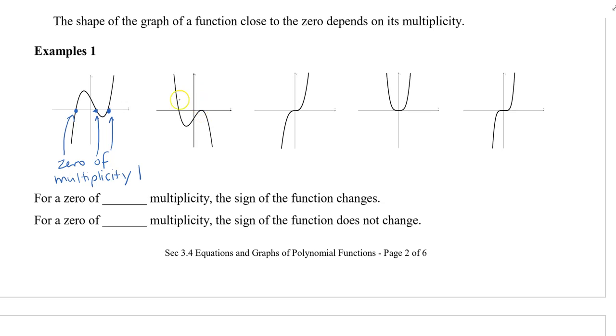However, this has a zero of multiplicity one because we can see that it goes straight through. But on the second bump here, notice how it hits the x-axis and then turns back around and goes back down. So this second zero is of multiplicity two.